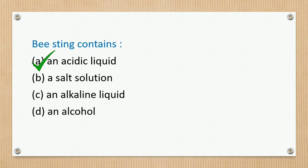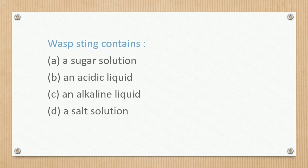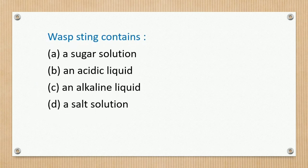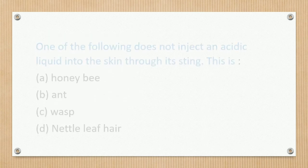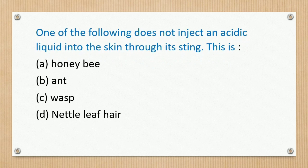Bee sting contains an acidic liquid. Wasp sting contains an alkaline liquid. One of the following does not inject an acidic liquid into the skin through its sting.